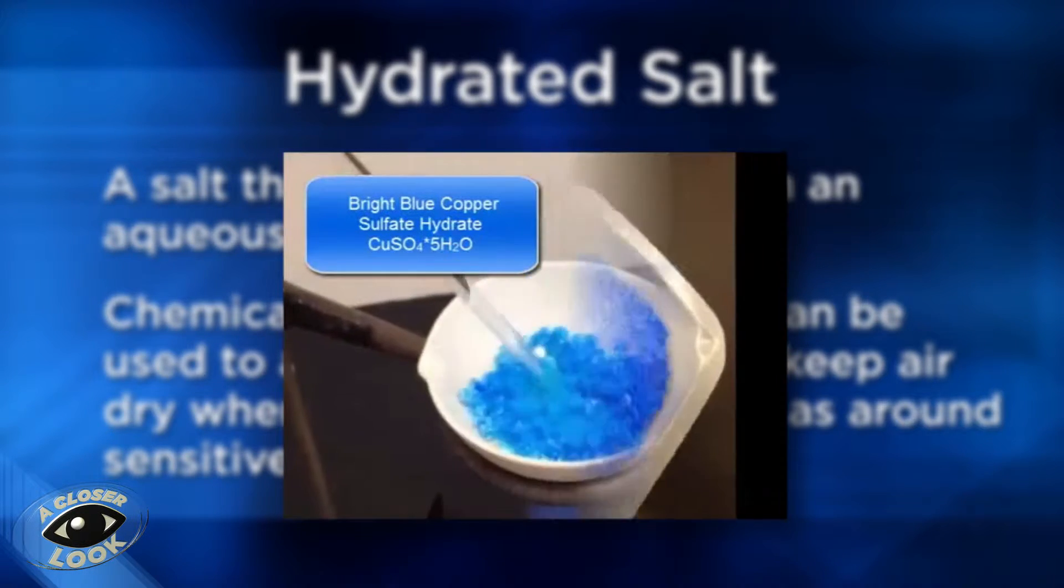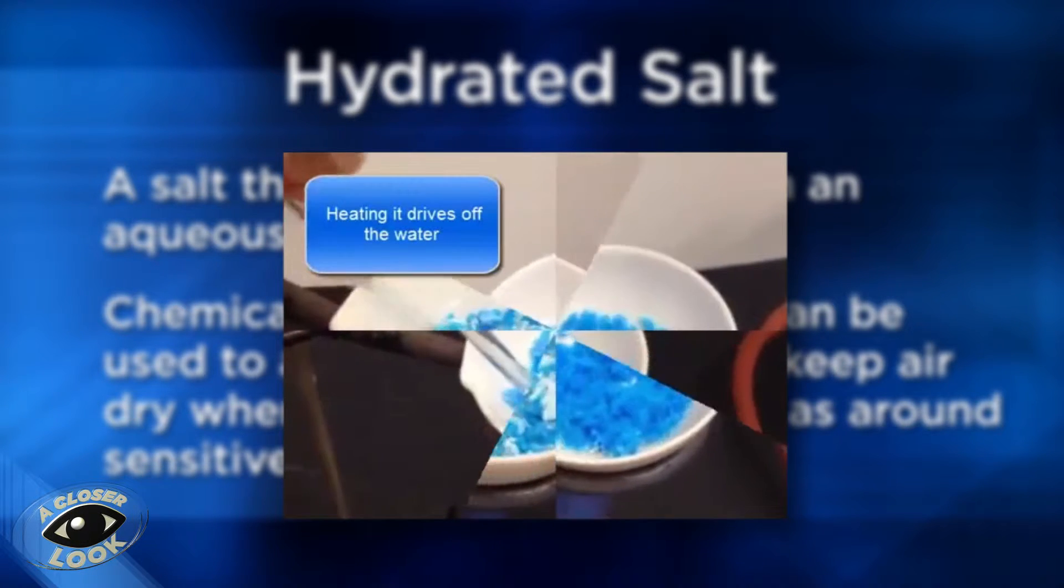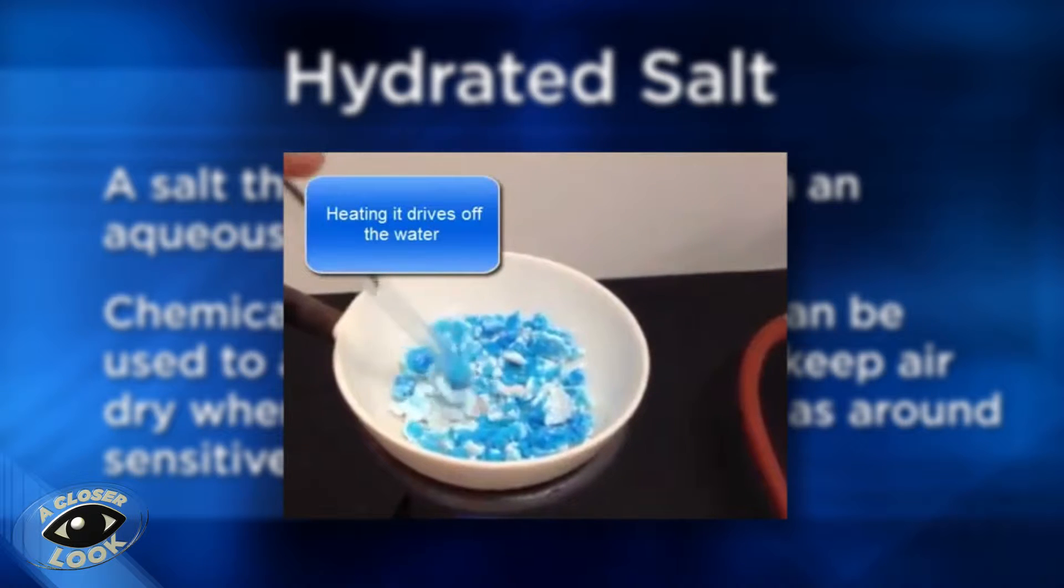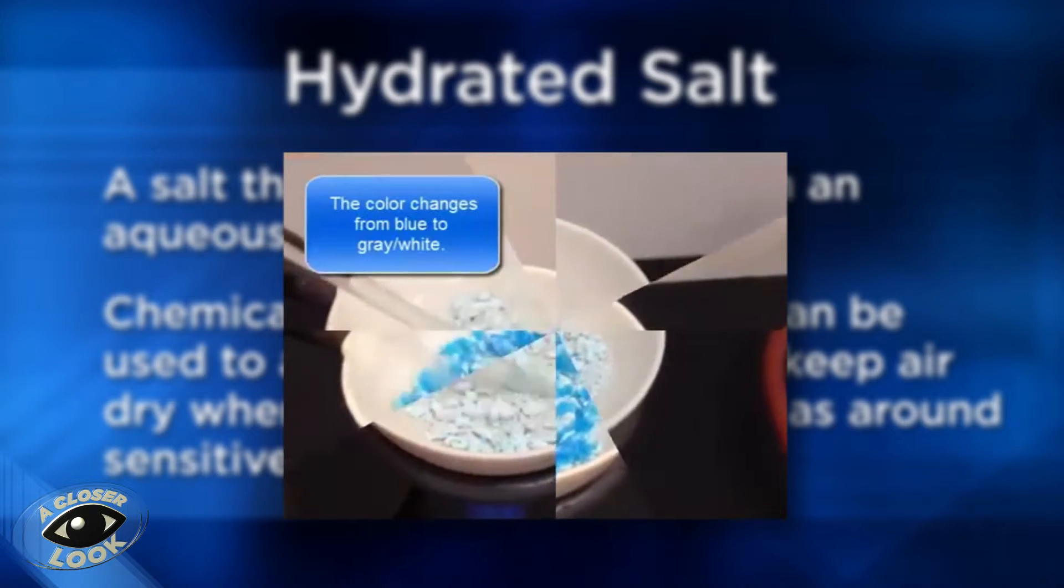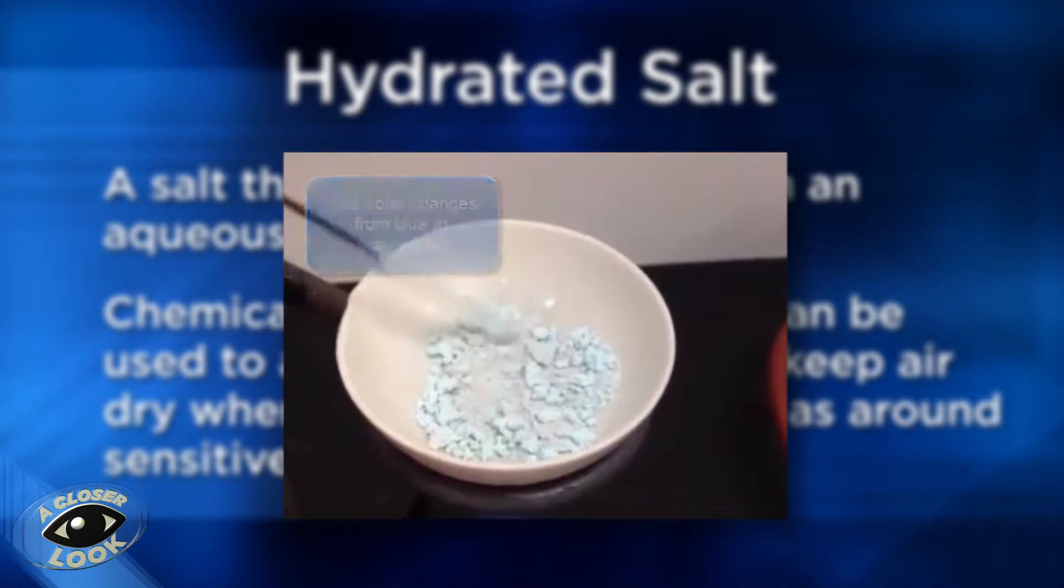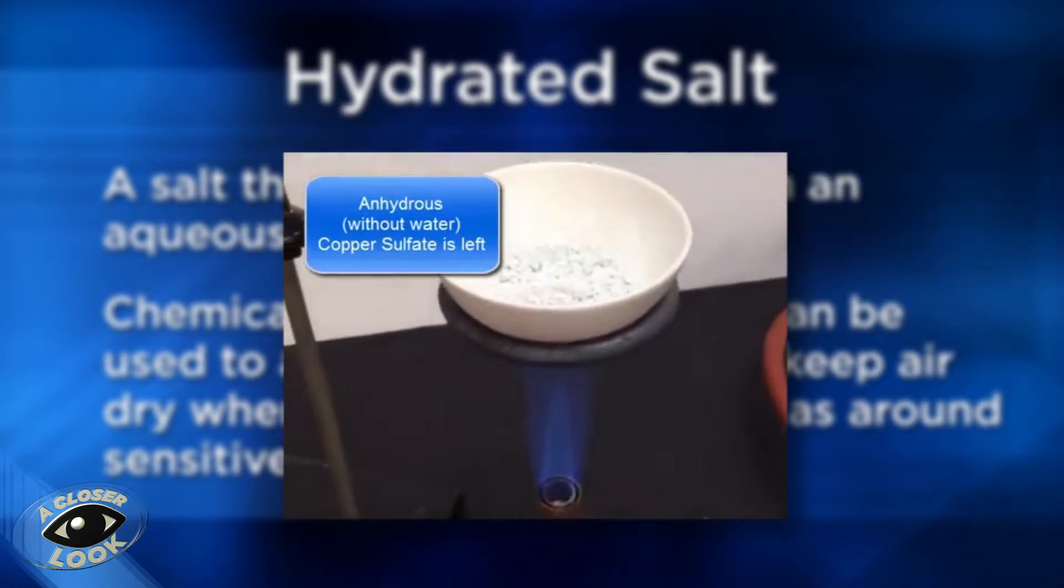It may look dry, but when it's heated, it liberates very large quantities of water. During the heating process, the crystals change color and are converted into an anhydrous form, which just means they lack water in their crystal structure.